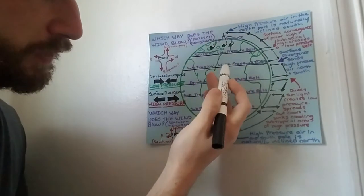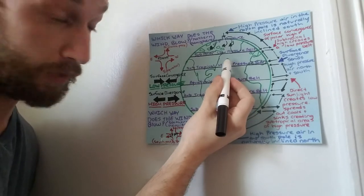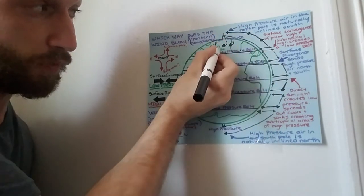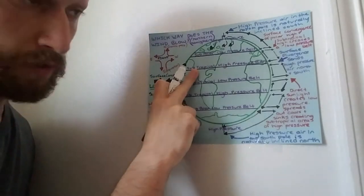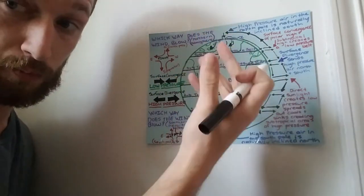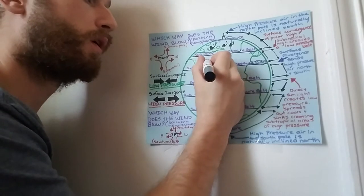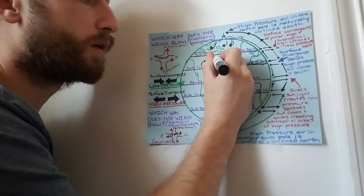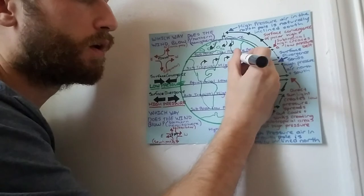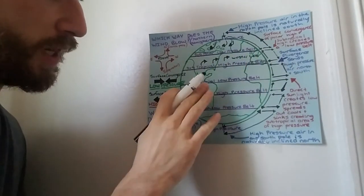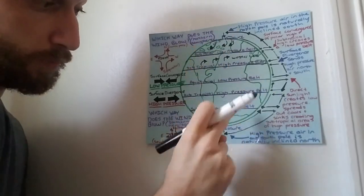The polar easterlies travel from high pressure to low pressure just like all wind does, and they bend to the right because of the Coriolis effect. From the subtropical high pressure belt, winds are also inclined to travel toward the subpolar low pressure system — these winds are called the westerlies because they travel from the west. There are westerlies in the southern hemisphere too, mirroring the polar systems at the south pole.